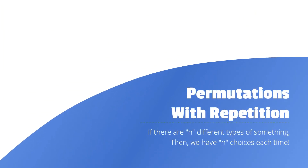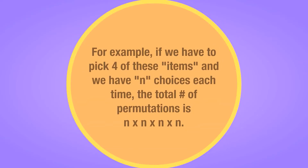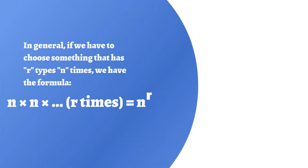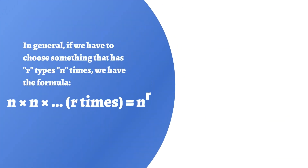Permutations with repetition: if there are n different types of something, then we have n choices every single time. For example, if we have to pick 4 of these items and we have n choices each time, the total number of permutations is n times n times n times n, or n to the power of 4. In general, if we have to choose something r times, our formula is n to the power of r.